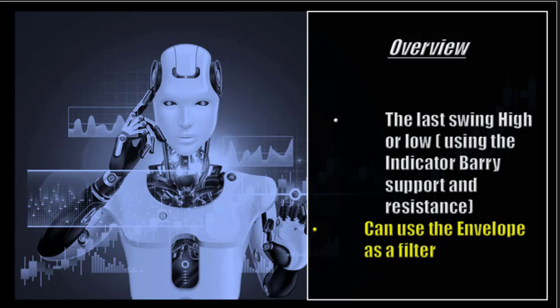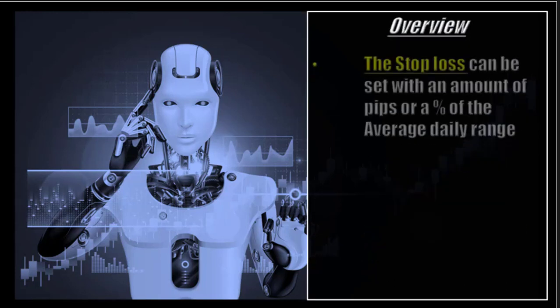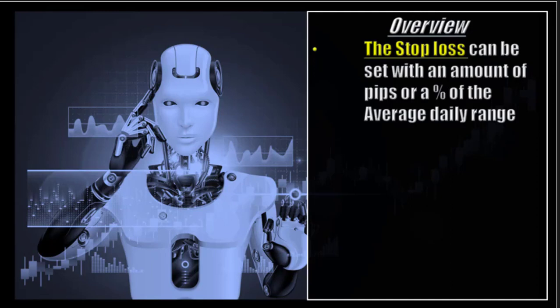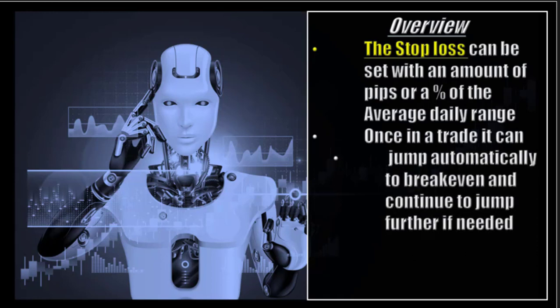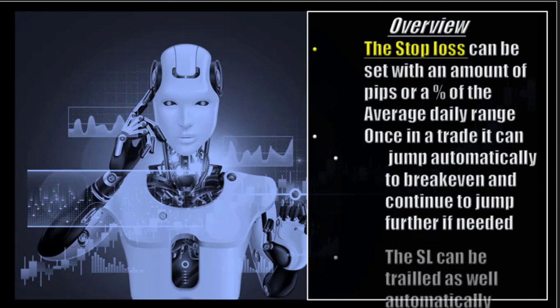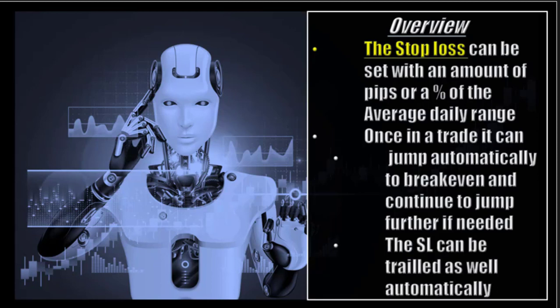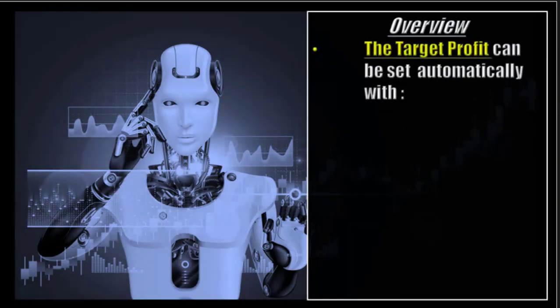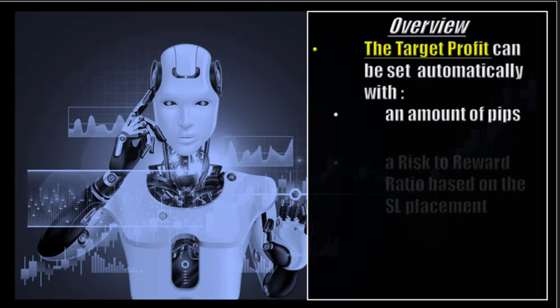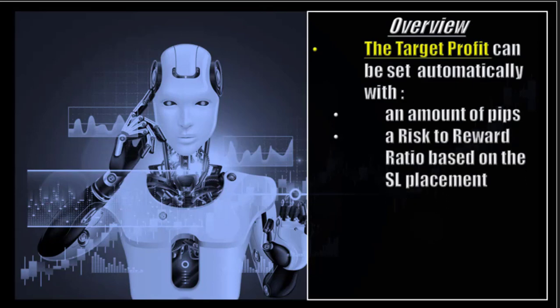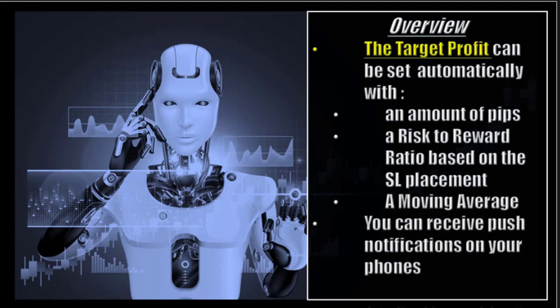It can use the envelope as a filter. The Stop Loss can be set with an amount of pips or a percentage of the average daily range. Once in a trade, it can jump the Stop Loss automatically to break even and continue to jump further if needed. The Stop Loss can be trailed as well automatically. The Target Profit can be set automatically with an amount of pips, a risk-to-reward ratio based on the Stop Loss placement, or a moving average. You can receive push notifications on your phone.